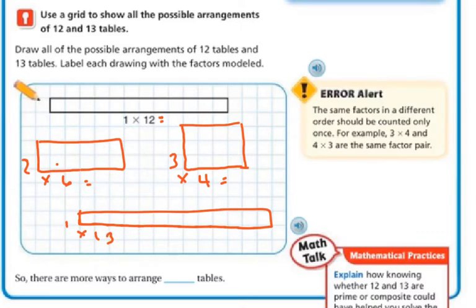So there are more ways to arrange the 12 tables, right? More than just one way. There's only one way to arrange the 13 table, but there are 3 ways to arrange the table with 12.